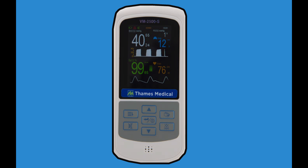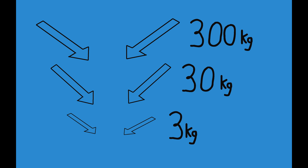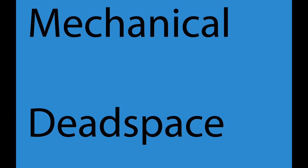Using a capnograph to measure end tidal CO2, I am going to show the significance of dead space for a patient, and specifically very small patients. The smaller the patient, the more critical the addition of mechanical dead space becomes. It is very easy to add dead space to a patient circuit when we don't trim our ET tubes to the mouth, or attach capnographs, filters, or heat moisture exchangers. Let's look at the effect of adding 10-15% mechanical dead space to a patient.